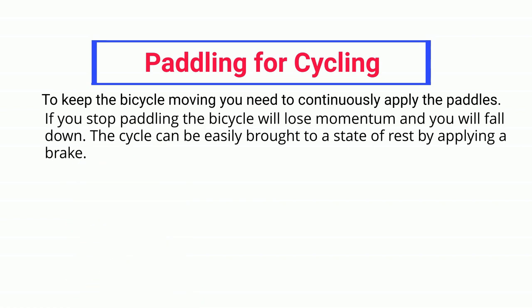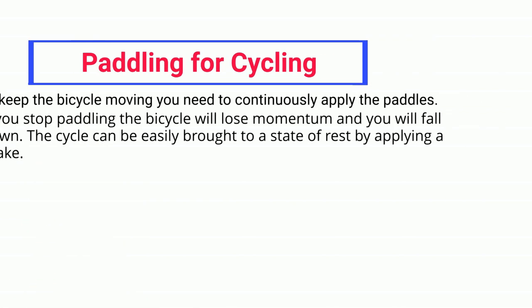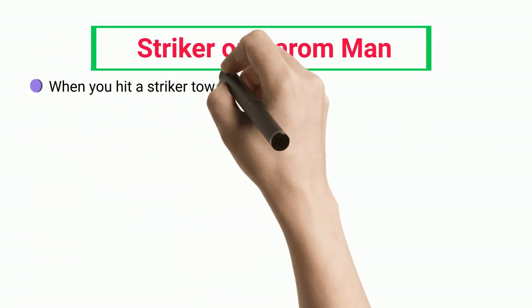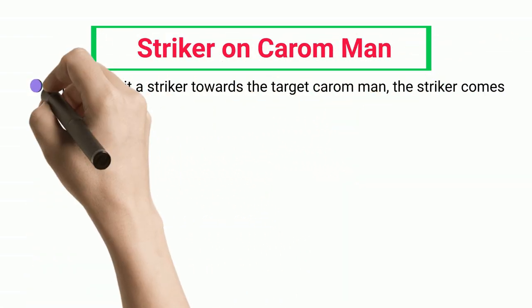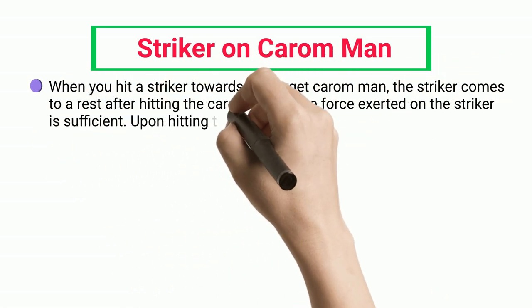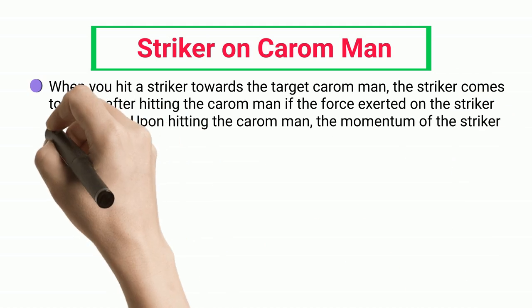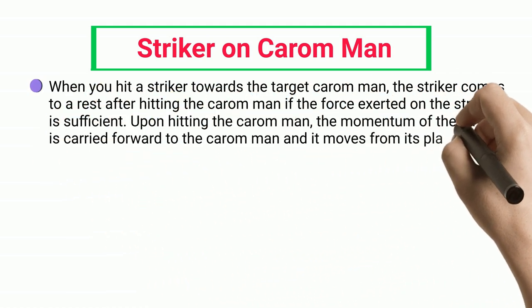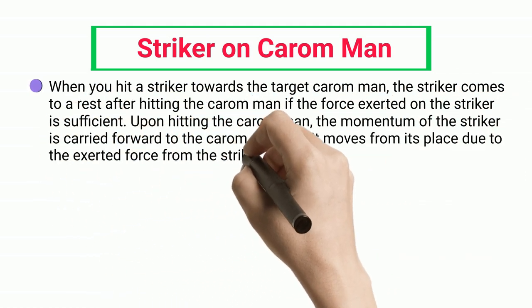Striker on carom man: When you hit a striker towards the target carom man, the striker comes to a rest after hitting the carom man if the force exerted on the striker is sufficient. Upon hitting the carom man, the momentum of the striker is carried forward to the carom man and it moves from its place due to the exerted force from the striker.